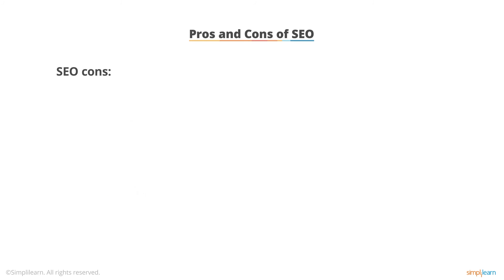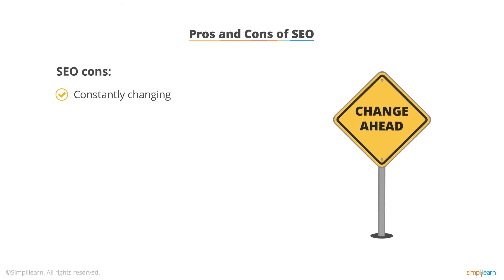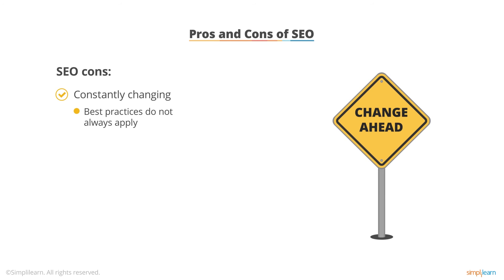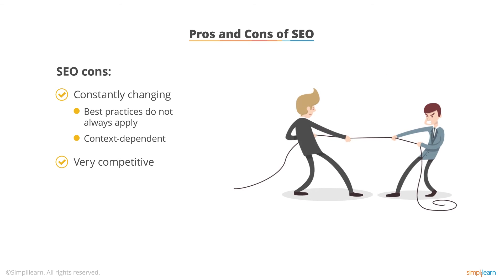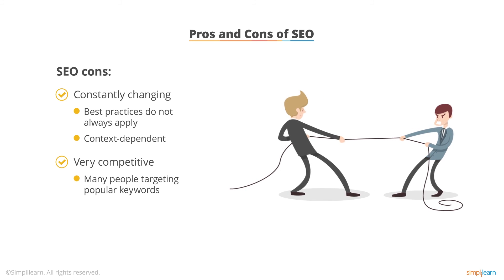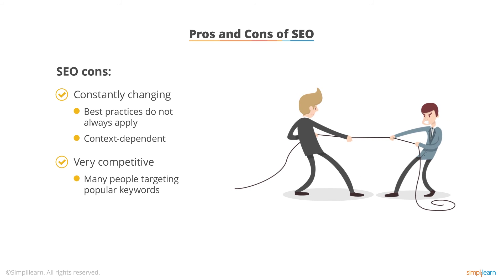What are the cons of SEO? The first and biggest one is that it's constantly changing. SEO is all over the place — sometimes a best practice will be true and sometimes it won't, depending on context and the broader ecosystem. The last con is that SEO, especially for head terms, gets very competitive. If you're targeting keywords that lots of people are searching for and many others are targeting the same thing, you'll run into a very competitive environment, more so than most other online marketing channels.